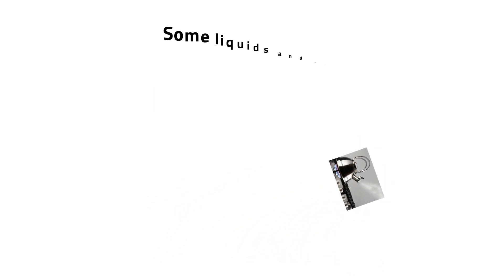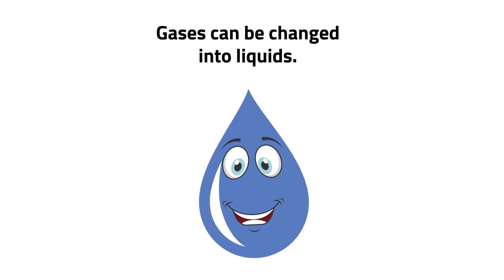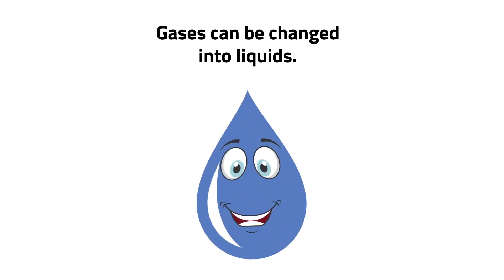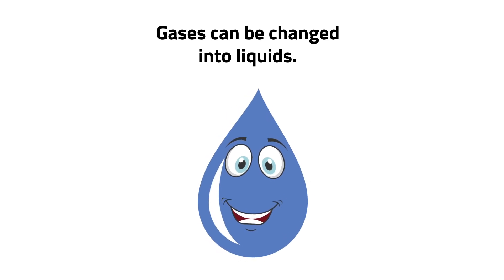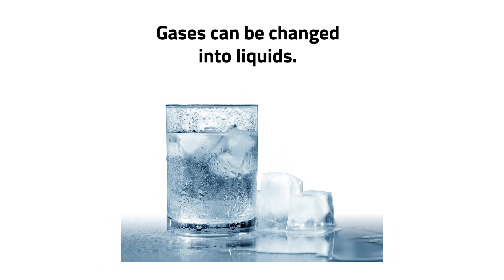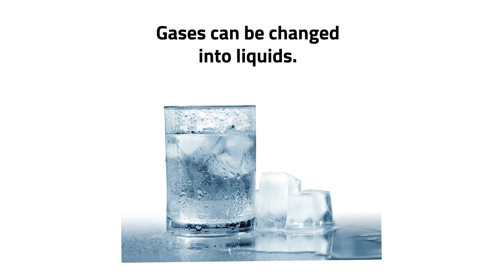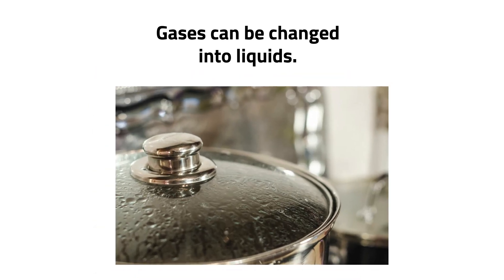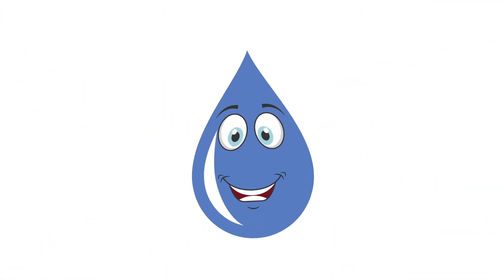Gases can be changed into liquids. An example is ice cubes in a glass of water — water vapor turns into water droplets when they touch the cold glass. Water vapor inside a boiling pot also turns into liquid when it touches the lid. Let's have a quick quiz.